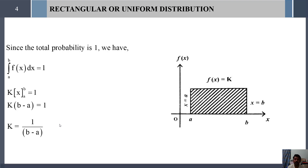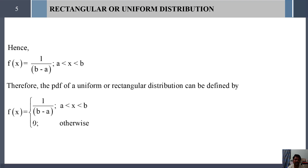To derive another form of the probability density function of uniform distribution, we use the primary property: the total probability value is always 1. As it is a continuous distribution, we find the total probability using integration. So integral from a to b of f(x) dx = 1. Substituting f(x) = k, taking k outside and integrating, we get k(b - a) = 1, therefore k = 1/(b - a).